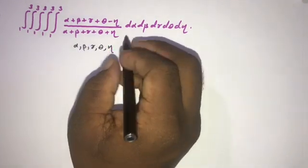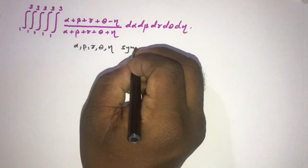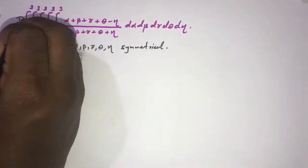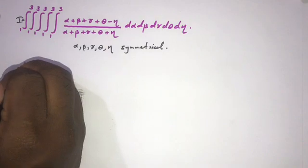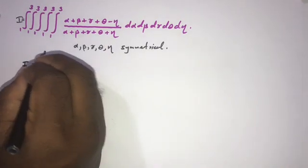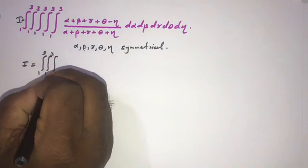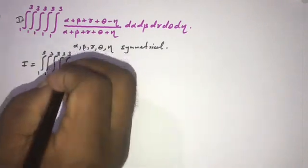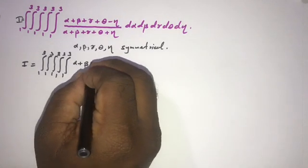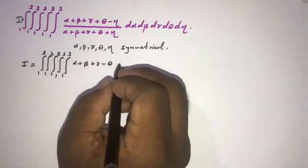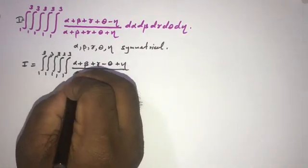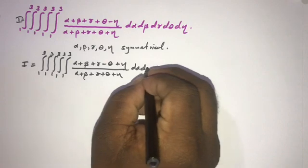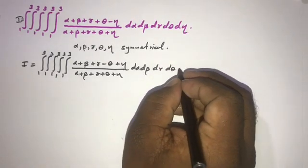How to begin? We know the variables alpha, beta, gamma, theta, and eta are symmetrical, so we can write this integral as I. We can also write I as the integral from 1 to 3 (five times) of (alpha plus beta plus gamma minus theta plus eta) over (alpha plus beta plus gamma plus theta plus eta), d alpha d beta d gamma d theta d eta.